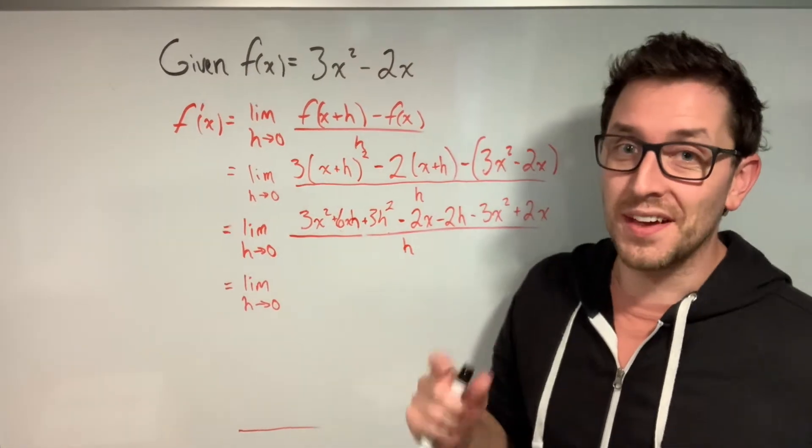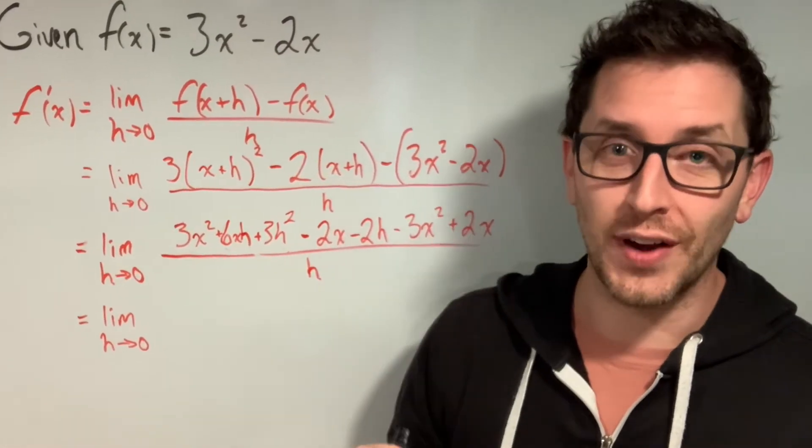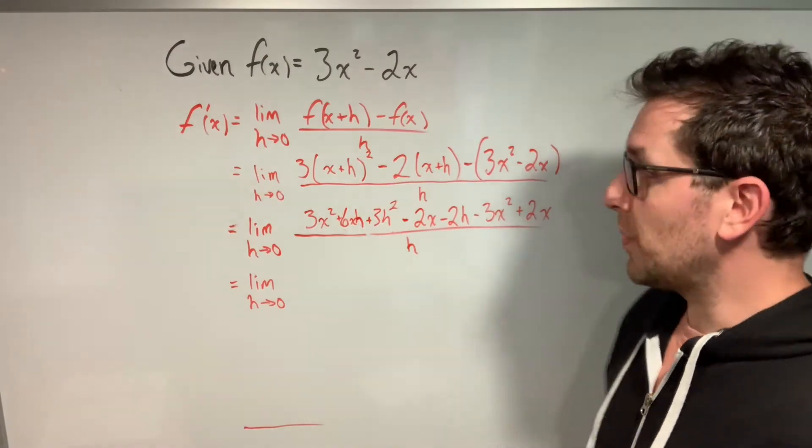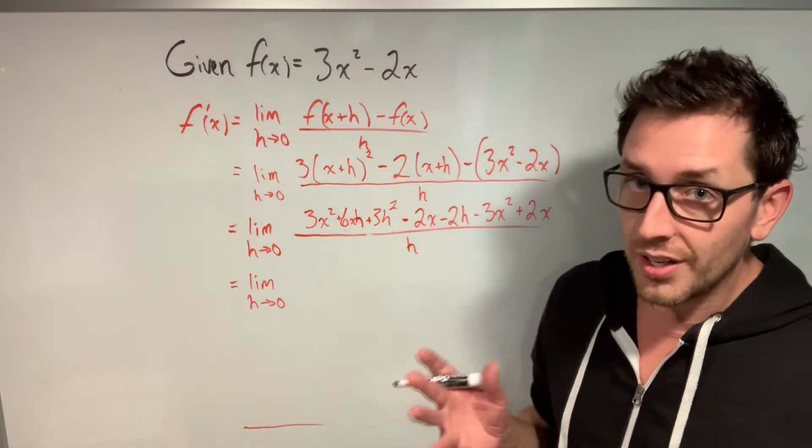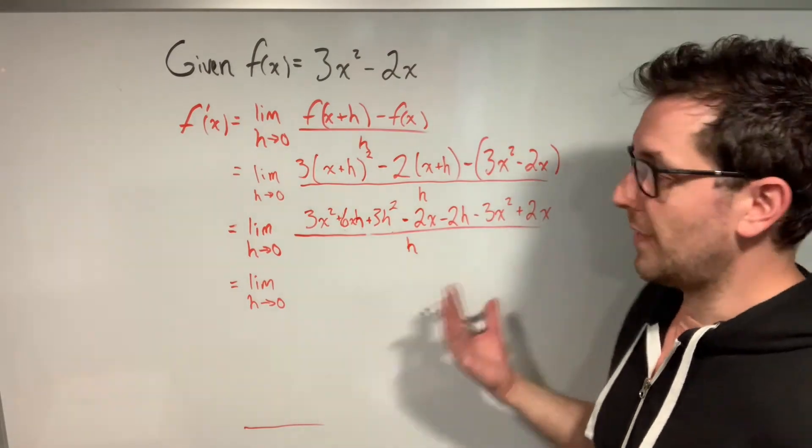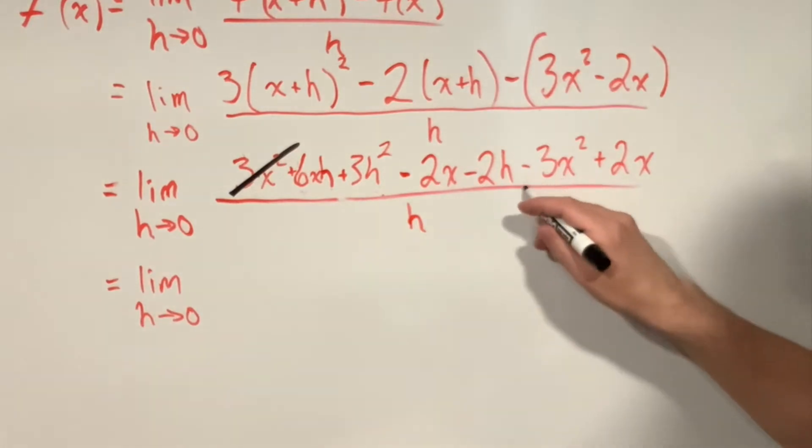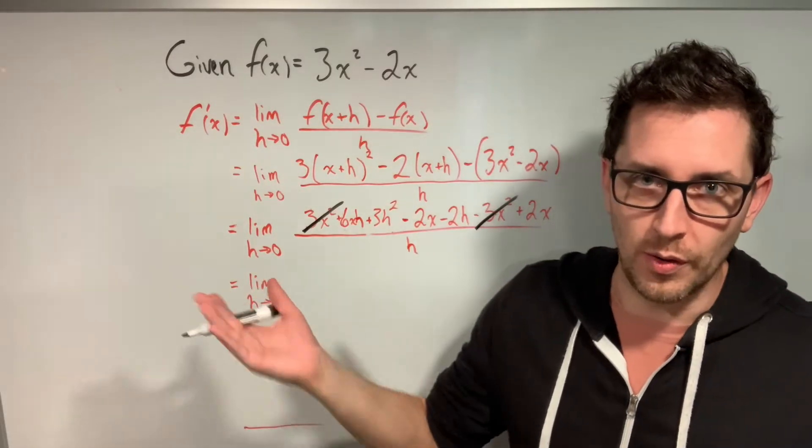Now, one of my favorite things about finding derivatives of functions using the first principles definition is that you can always check your answer in the middle of your computation, because what you should see happen is that any term with only an x, not an h, should cancel out entirely. And you're going to see a few examples of that here. We have 3x². And then over here, we have -3x², 3x² minus 3x² is zero. So it's gone.